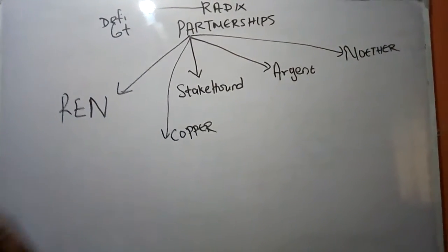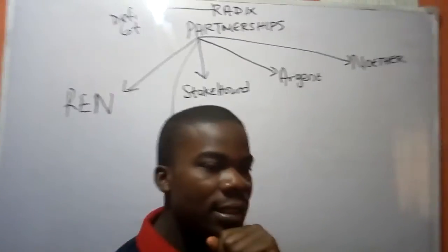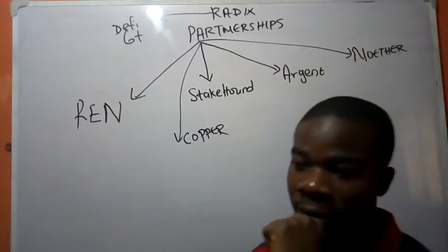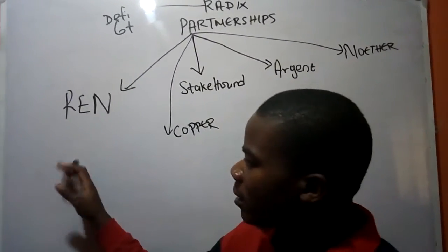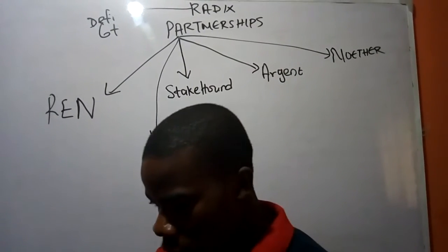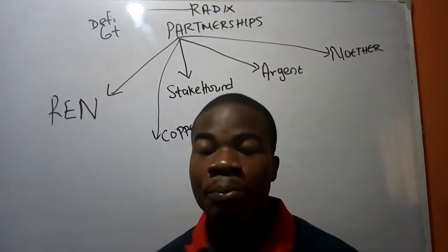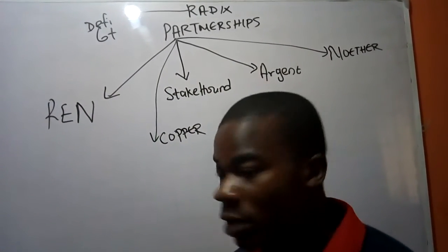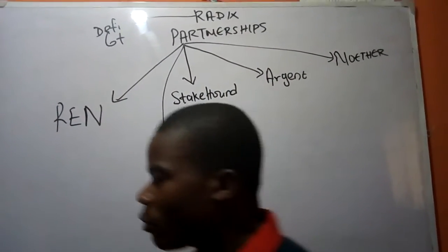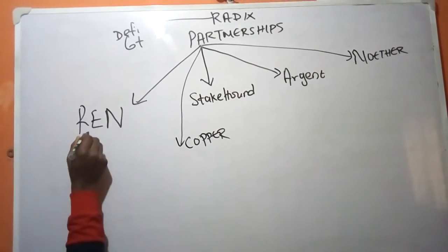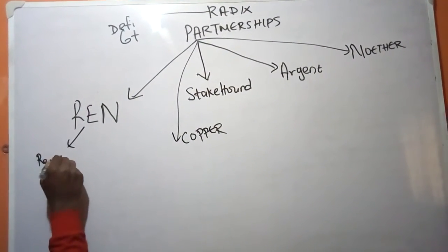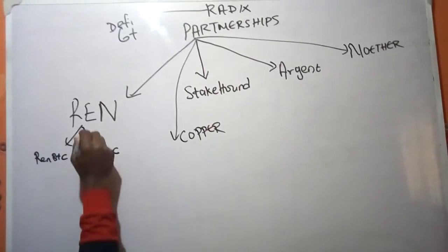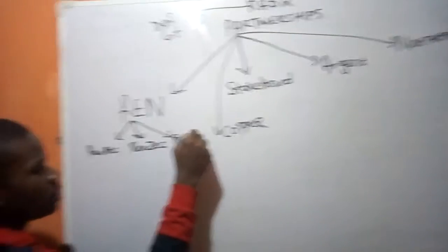Let's start with Rain. Rain is a project that helps build the DeFi ecosystem. Right now, there is a need to transition some assets to chains that will have the likes of BTC, and you cannot really put BTC on the Ethereum system directly. You can use platforms like Rain Protocol. They have what we call Rain BTC, Rain ZEC, and Rain ETH.